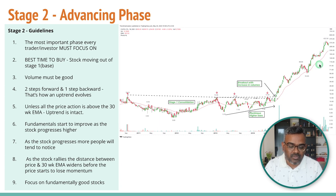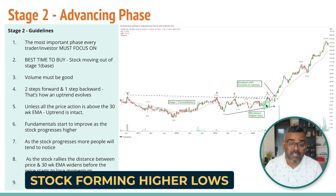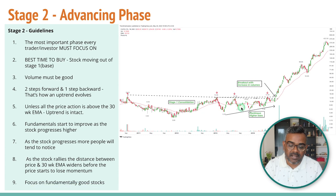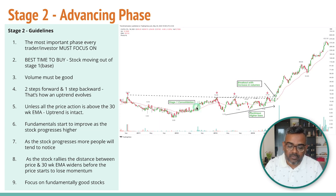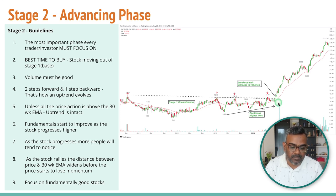Before the stock breaks out of stage two, you will notice it making higher lows. The stock makes a low, then the next low is higher than the previous one, and so on — it's rising, going up and coming down with rising lows. It's very important to note that when a breakout happens, the stock lows have been rising. A stock going sideways while making higher lows on the weekly chart is a nice stage one base, and a breakout confirms the stage two uptrend.